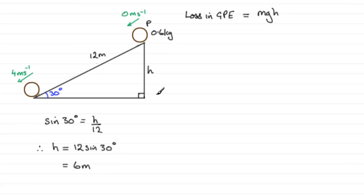So it's going to be equal to 0.6 for the mass, multiplied by 9.8 for g, and h we've just seen is 6. If you work this out, it comes to 35.28 joules.